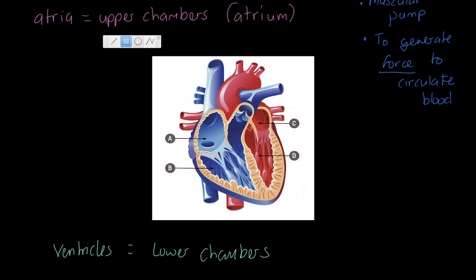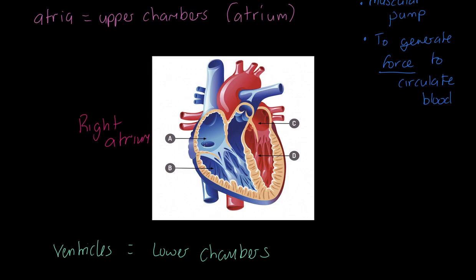Now let's start labeling these individually. Figure A here is what we call the right atrium. You might be thinking: why is it on the right? Well, it's on the right because we're looking at this heart as if it's sitting in someone's chest, in the center, just behind the sternum and slightly to the left. We're looking at it from the front — so that's our right atrium.